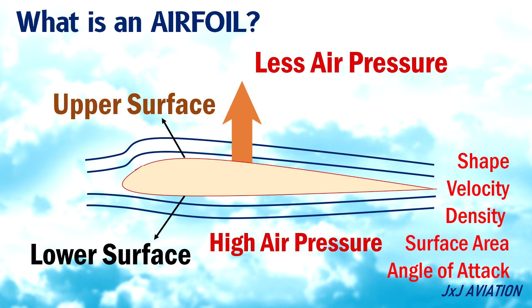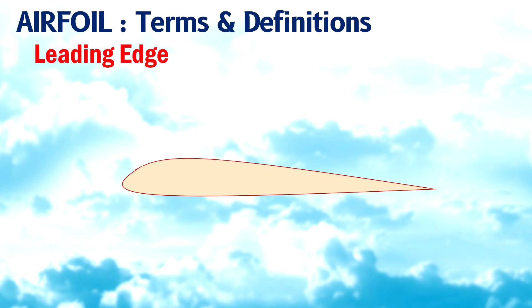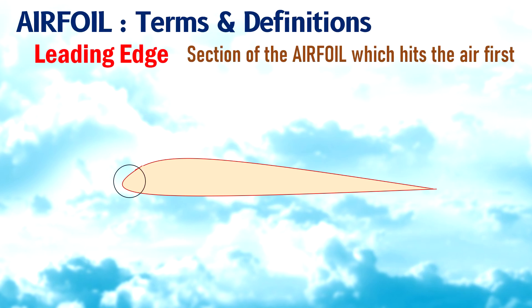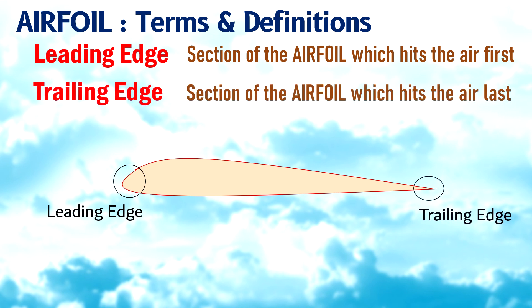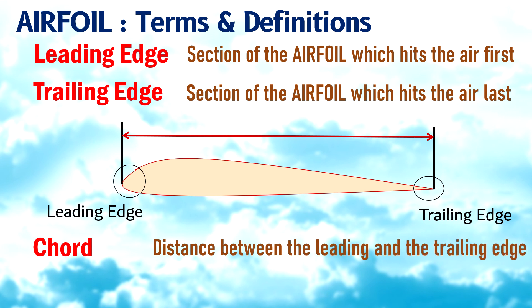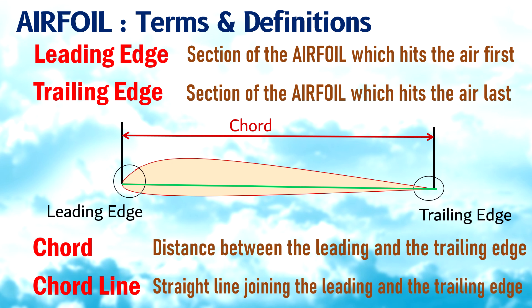Now let's look at some terms and definitions associated with an airfoil. Leading edge: the section of the airfoil which hits the air first. Trailing edge: the section of the airfoil which hits the air last. Cord: the distance between the leading and the trailing edge. Cord line: a straight line joining the leading and the trailing edge.